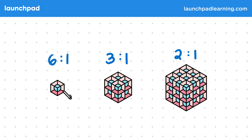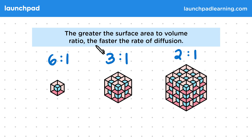As we move from left to right, the surface area to volume ratio is decreasing, so how does this affect the rate of diffusion? The greater the surface area to volume ratio, the faster the rate of diffusion.